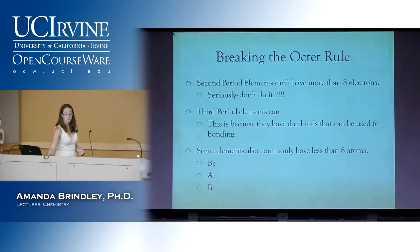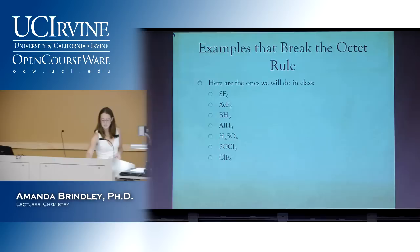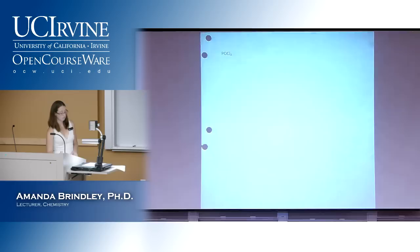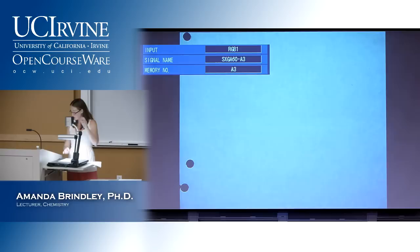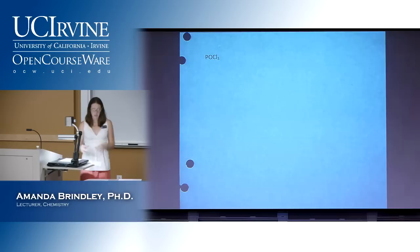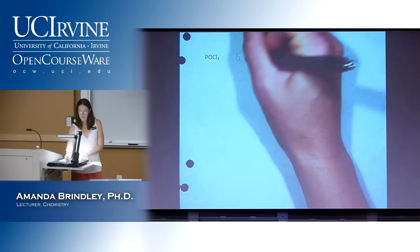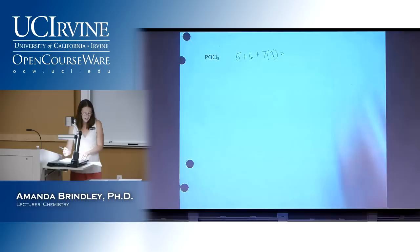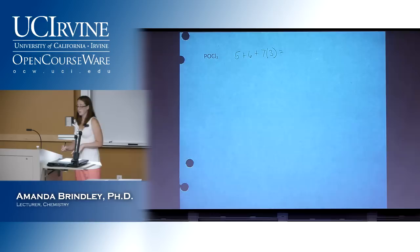So back to our Lewis structures we've been working through in class. We'd already done a bunch, and this is where we left off with POCl3. Remember our first step whenever we do these Lewis structures is to count up all of our electrons. We have five from the phosphorus, six from the oxygen, seven from each chlorine, so we know exactly how many we have to deal with.